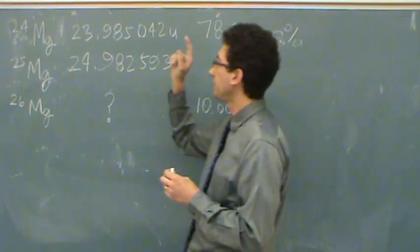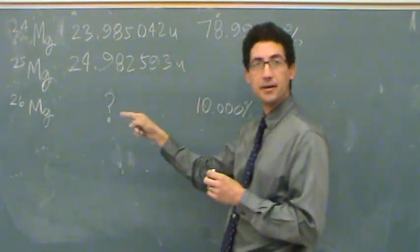This is an isotope problem. We have 24, 25, and 26 of magnesium.